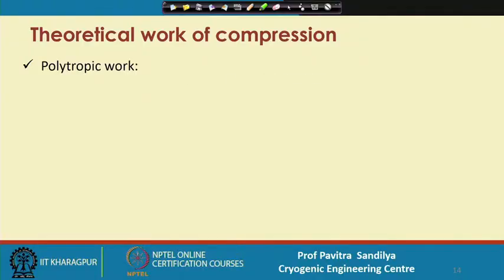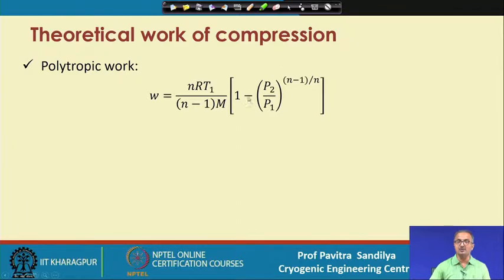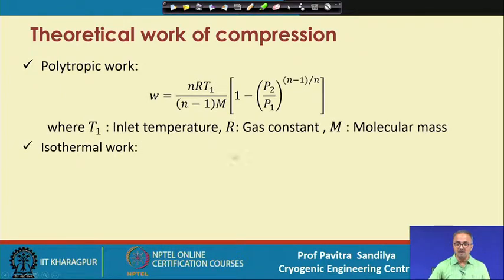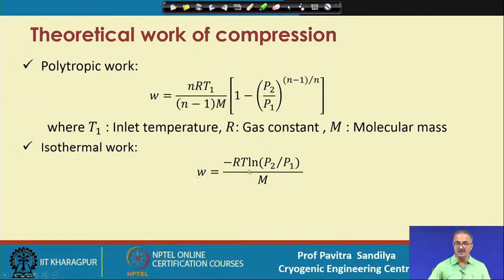The theoretical work of compression for a polytropic process is obtained by integrating the earlier equation. The result contains the compression ratio P2/P1, the inlet temperature T1, and n, the molecular mass of the gas. If we put n equal to 1, we solve separately and obtain the expression for isothermal compression work, which involves the natural logarithm of the compression ratio.